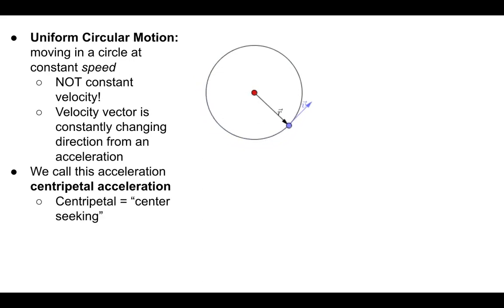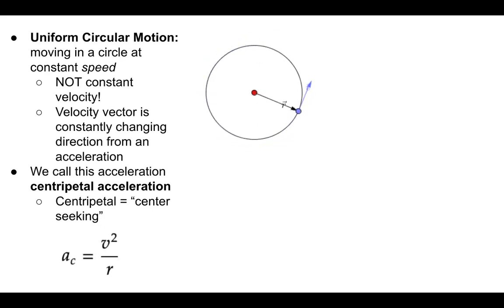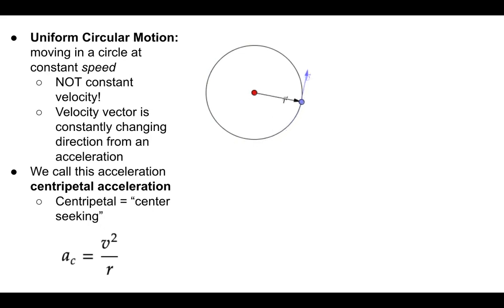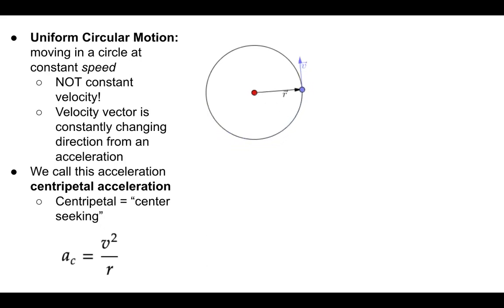Centripetal means center-seeking. The equation to find the magnitude of centripetal acceleration is velocity squared over radius: a = v²/r, where r is the radius. I'll talk about the direction of acceleration in a bit, so don't worry about that right now. This is how we find the magnitude of centripetal acceleration.